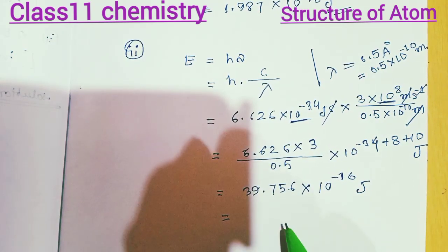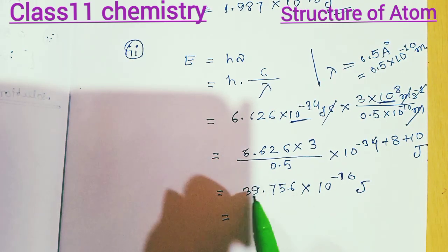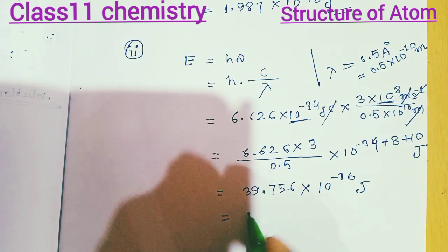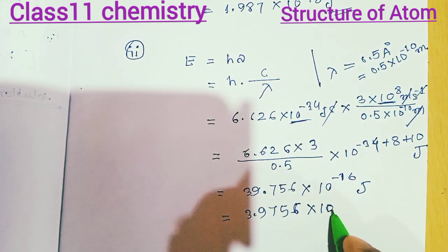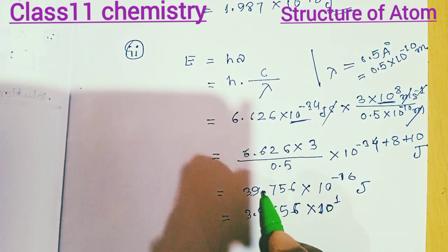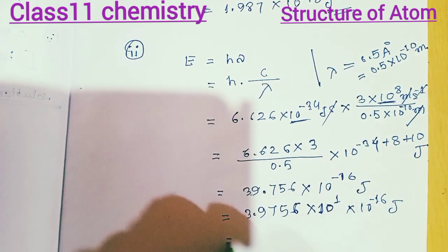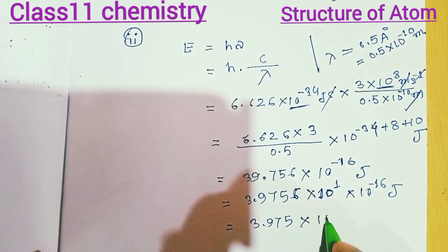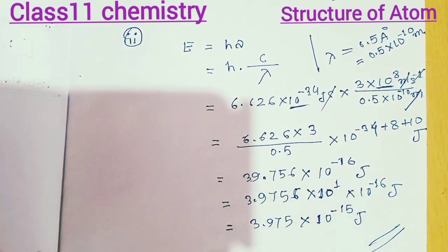We need to write this in scientific notation. In scientific notation, the decimal point must be placed after the first significant digit. Moving the decimal one place to the left increases the power by one. So 39.756 becomes 3.9756. The power changes from minus 16 to minus 15. Therefore the answer is 3.975 into 10 to the power minus 15 joules.